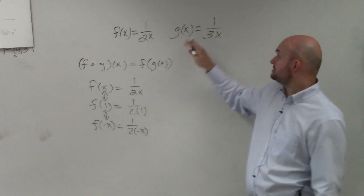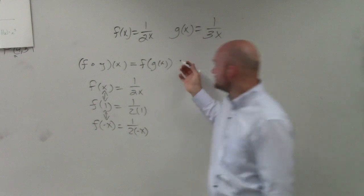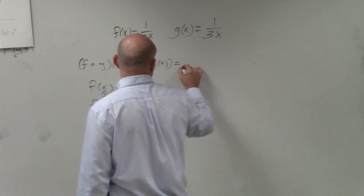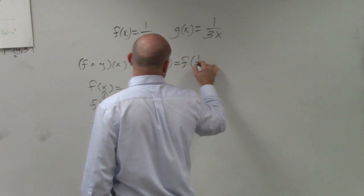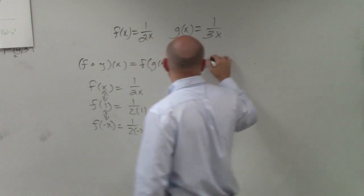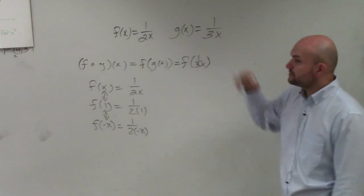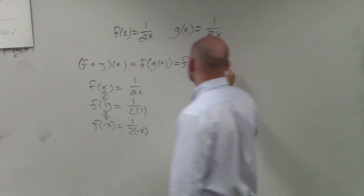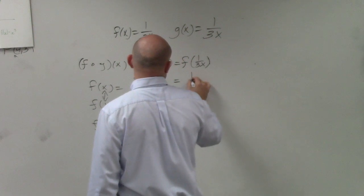But now we know what g of x is: 1 over 3x. So that's really the same thing as saying f of 1 over 3x. So now I'm going to plug in 1 over 3x into my f(x) function, which looks like this.